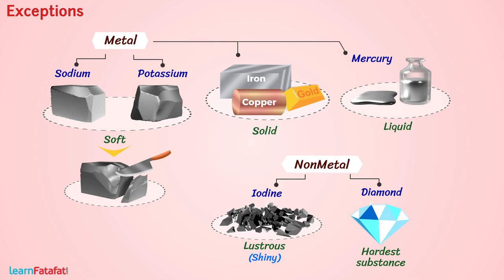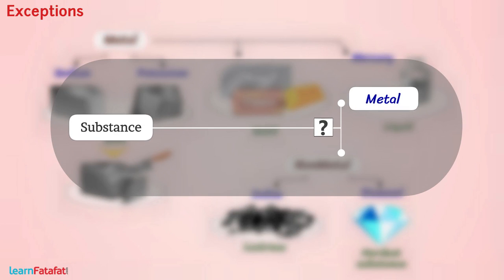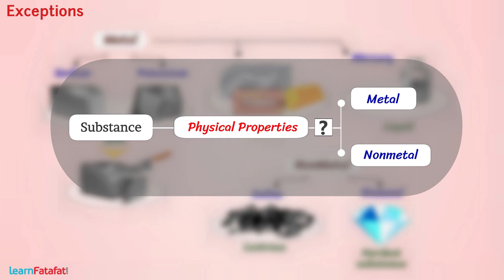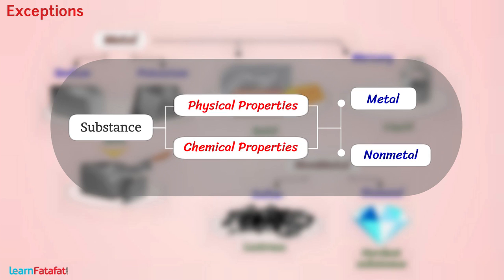This means we cannot classify substances as metals or non-metals based only on their physical properties. To classify them, we have to study their chemical properties as well.